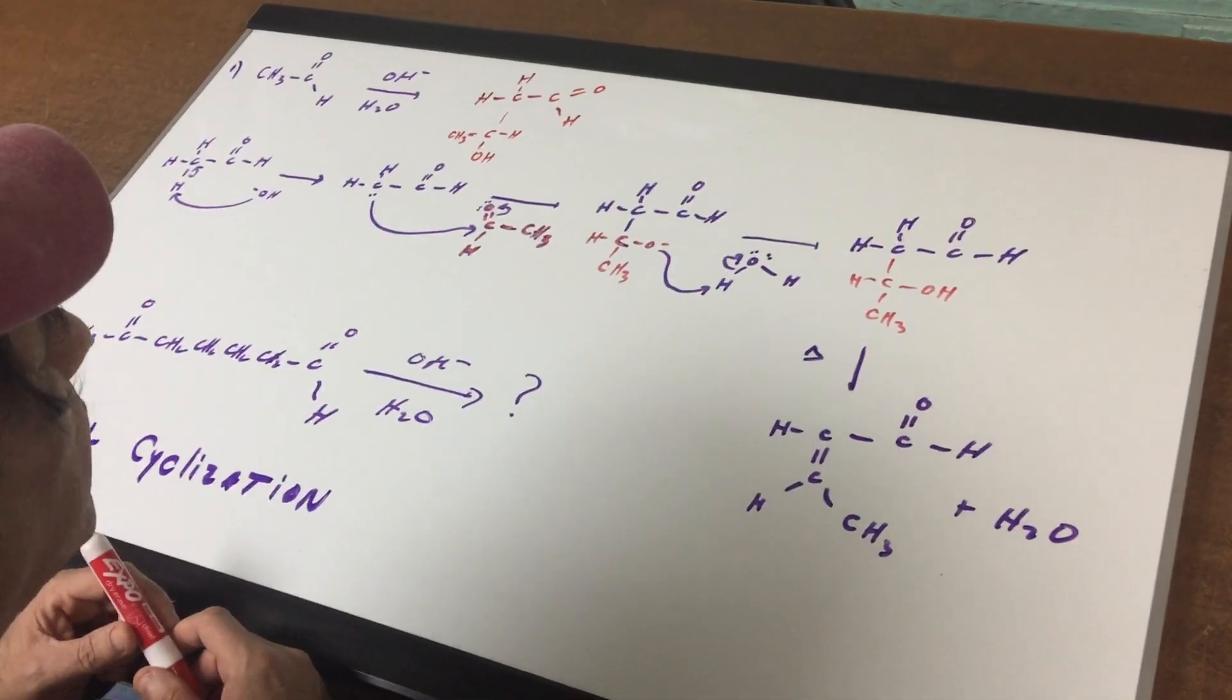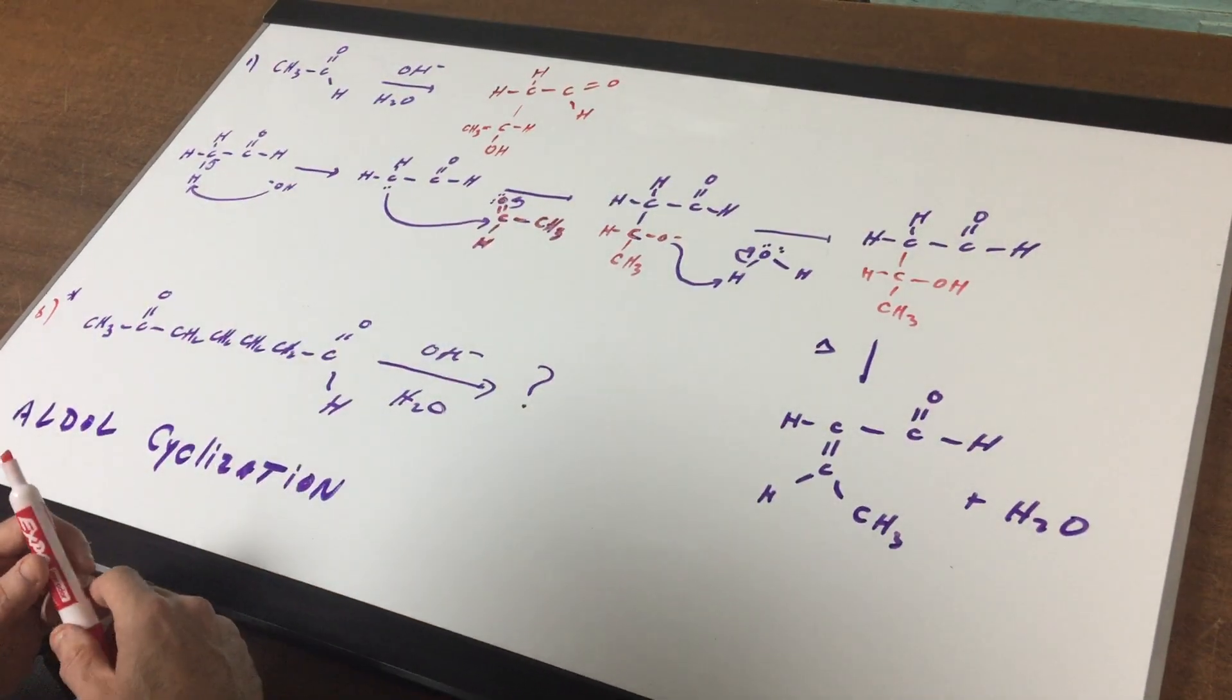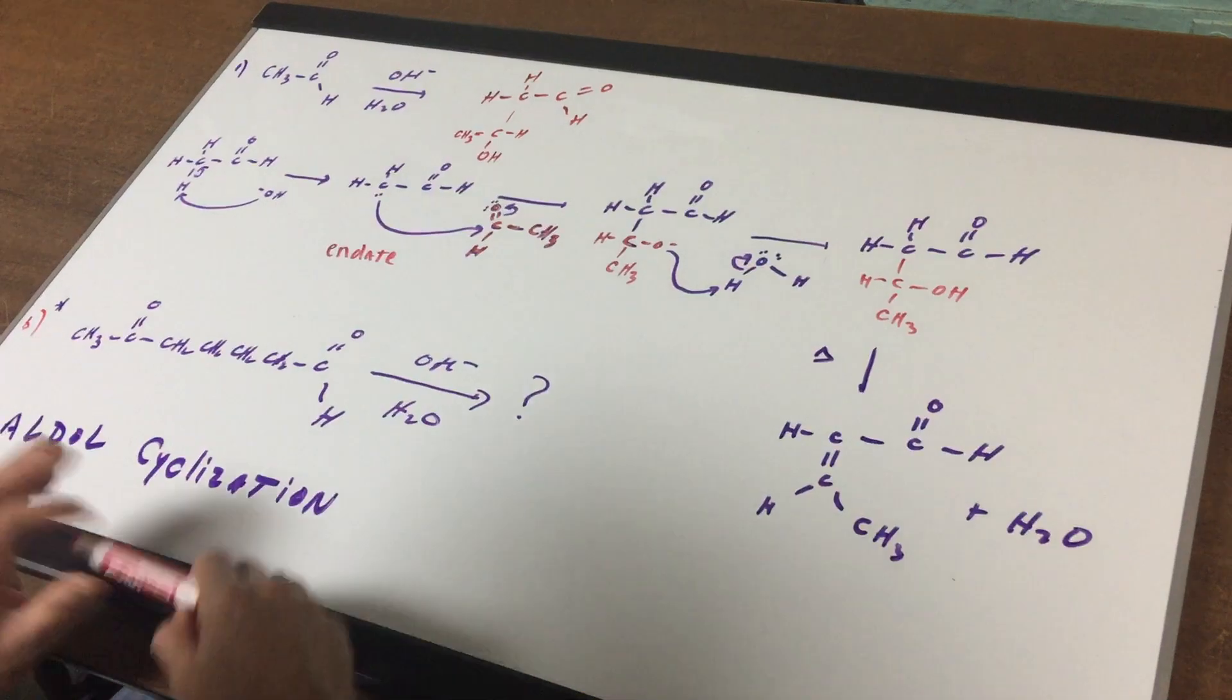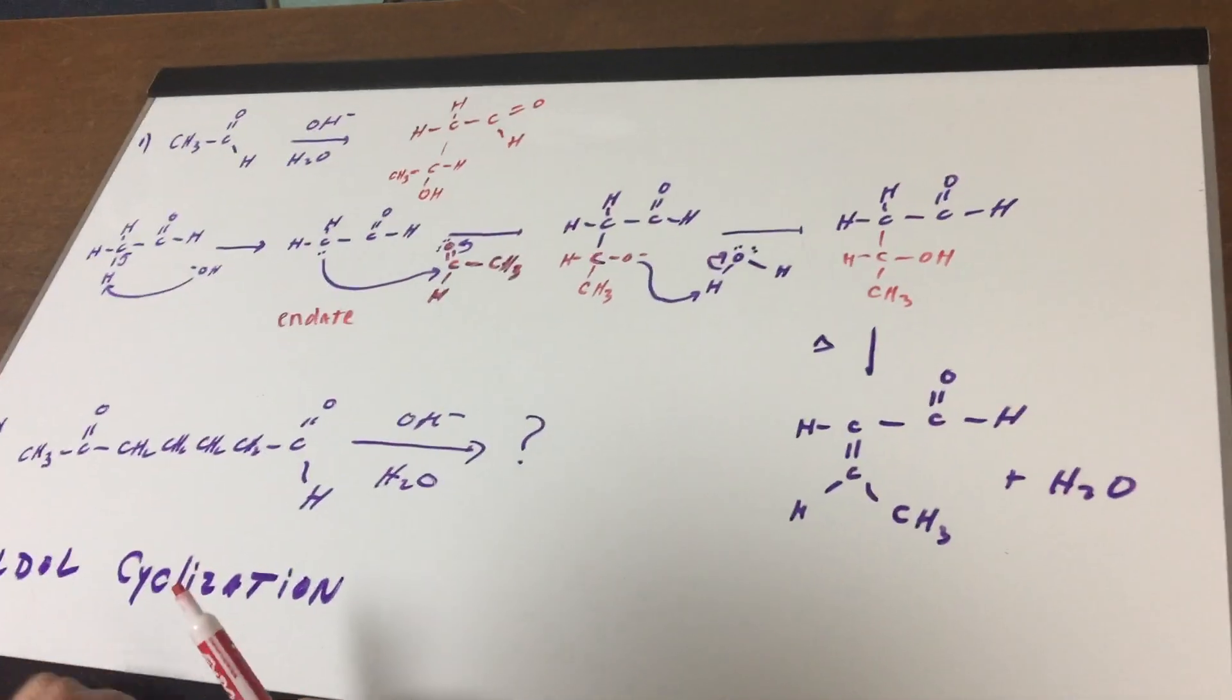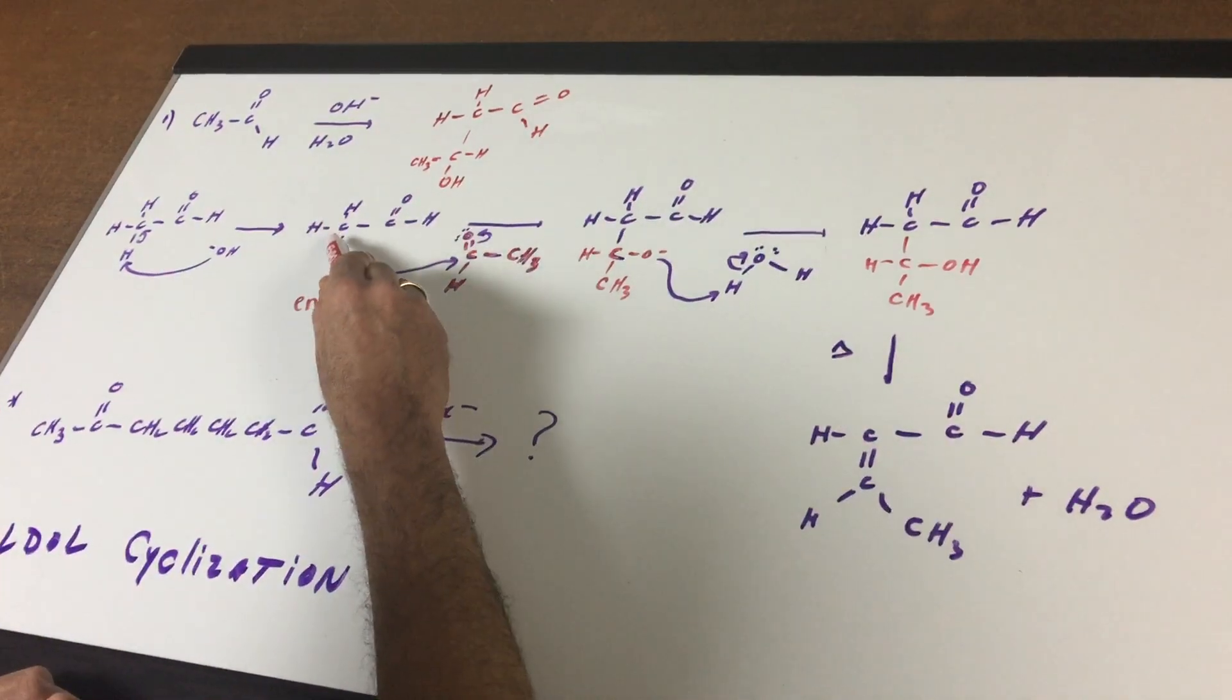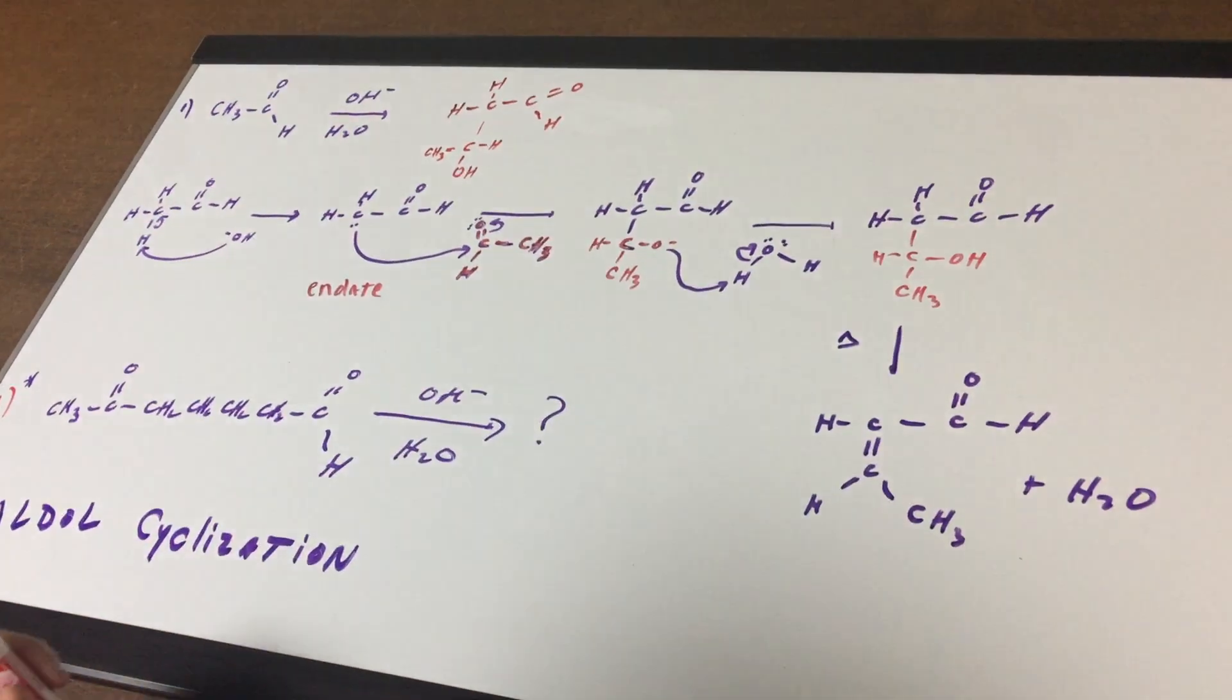Let's go over how it really occurred, though, so you can understand the mechanics. In the very first step, the base came in, removed the alpha hydrogen, and formed this intermediate known as an enolate anion. This enolate anion is very stable because it's got resonance. I didn't draw the resonance form in here, but I'm hoping you can see it.